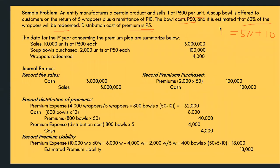Data for the first year: sales of 10,000 units at 300 pesos each — total sales of 3 million pesos. Soup bowls purchased: 2,000 units at 50 pesos each — total 100,000 pesos. Wrappers redeemed: 4,000 wrappers. Journal entry — first, record the sales: debit cash, credit sales, 3 million pesos.